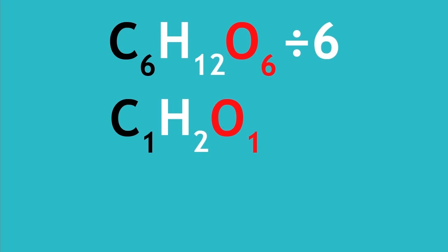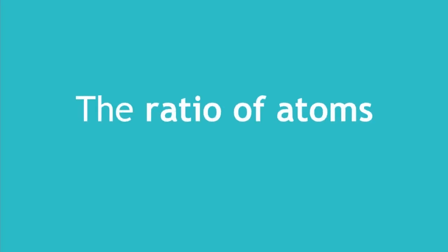We don't show the ones, and so the empirical formula is CH2O. Although empirical formula doesn't show us the molecule, or how it is arranged, it does tell us the ratio of atoms in the molecule.